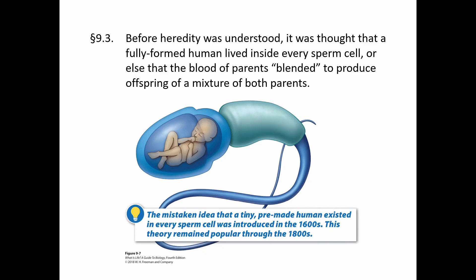Before we actually understood how traits were inherited, the thought was that every sperm cell had a tiny little fully formed human with a head and arms and legs and everything inside the sperm cell. Or the other idea was that the blood of parents somehow blended to produce offspring that looked like a mix of both mom and dad.